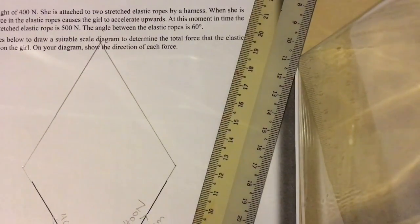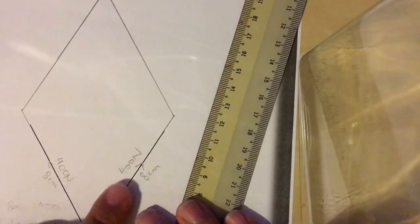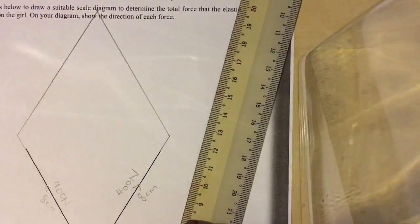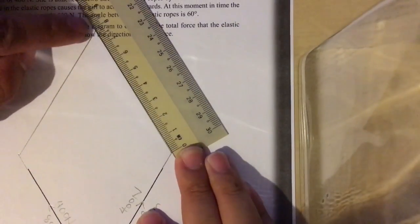If you have done it correctly, then the length of this line will be the length of this line. Therefore, if I measure this line now, it should be 8 cm long.